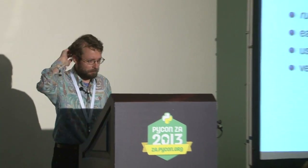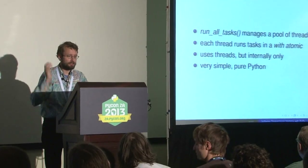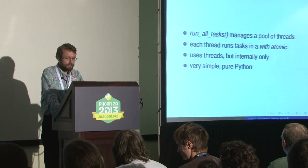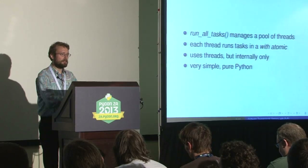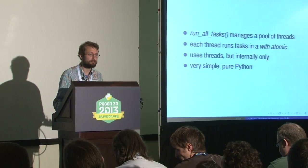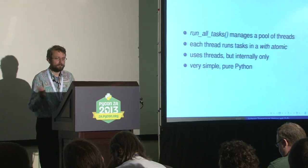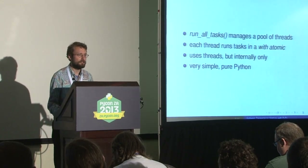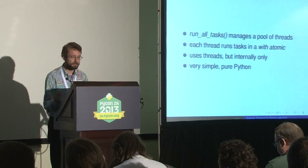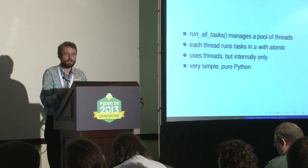The thread pool manages a pool of threads. Each thread runs a task in 'with atomic'. It uses threads internally, so you never see that there are any threads. It's simple — you can implement the basic idea of a thread pool in pure Python.